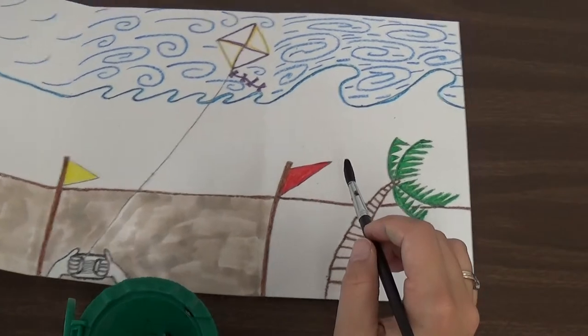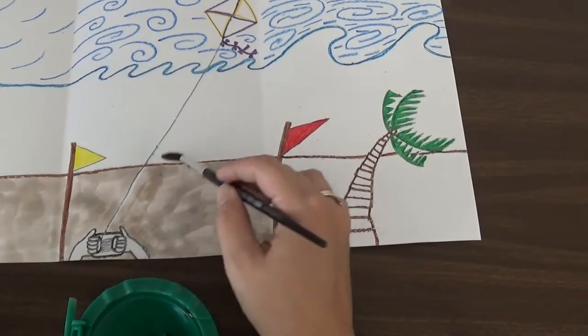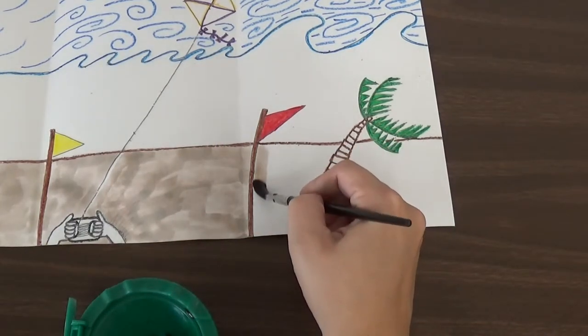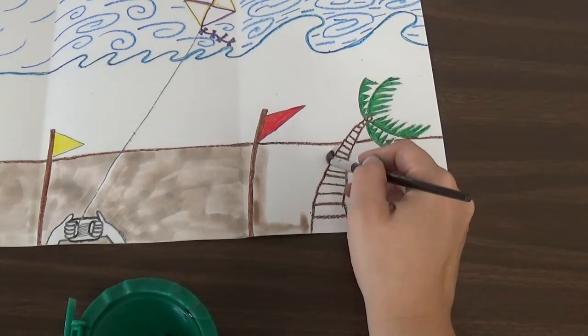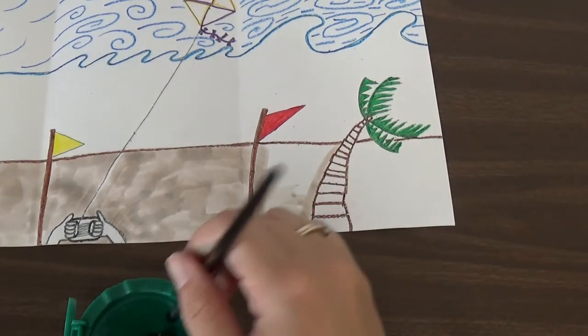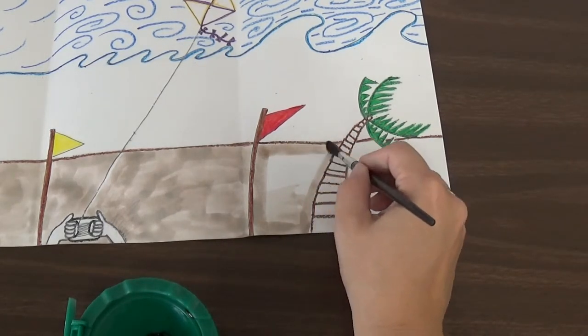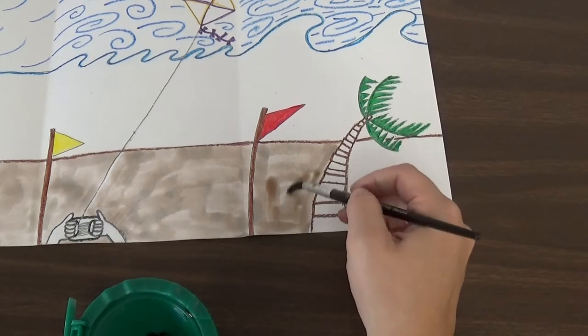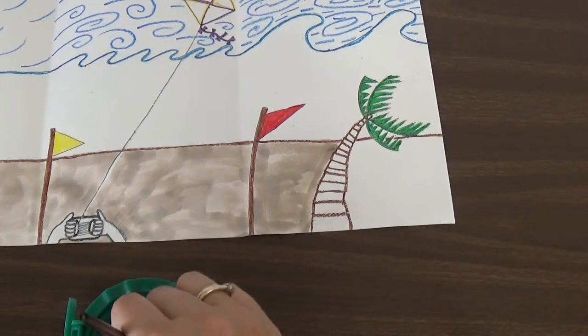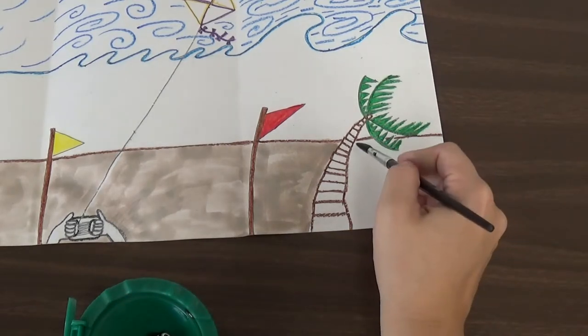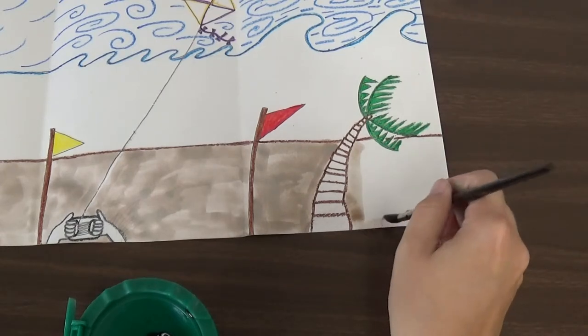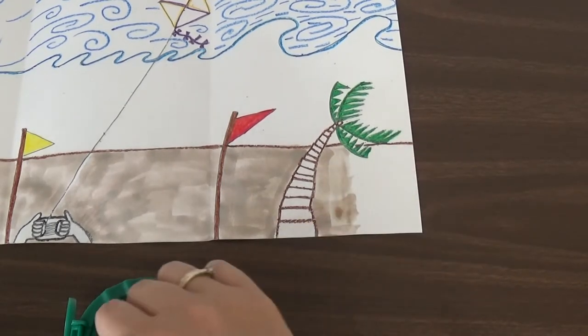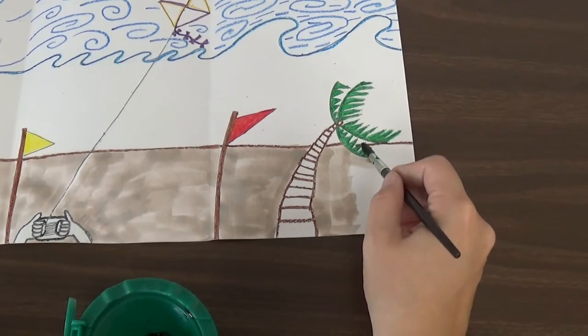We have one more section to paint brown. I notice this is kind of light. I'm going to fill that in a second. There we go. I'm going to paint this last section brown. Very carefully painting it. Painting all my sand in. Nice and carefully painting all my sand in. Painting it all in.